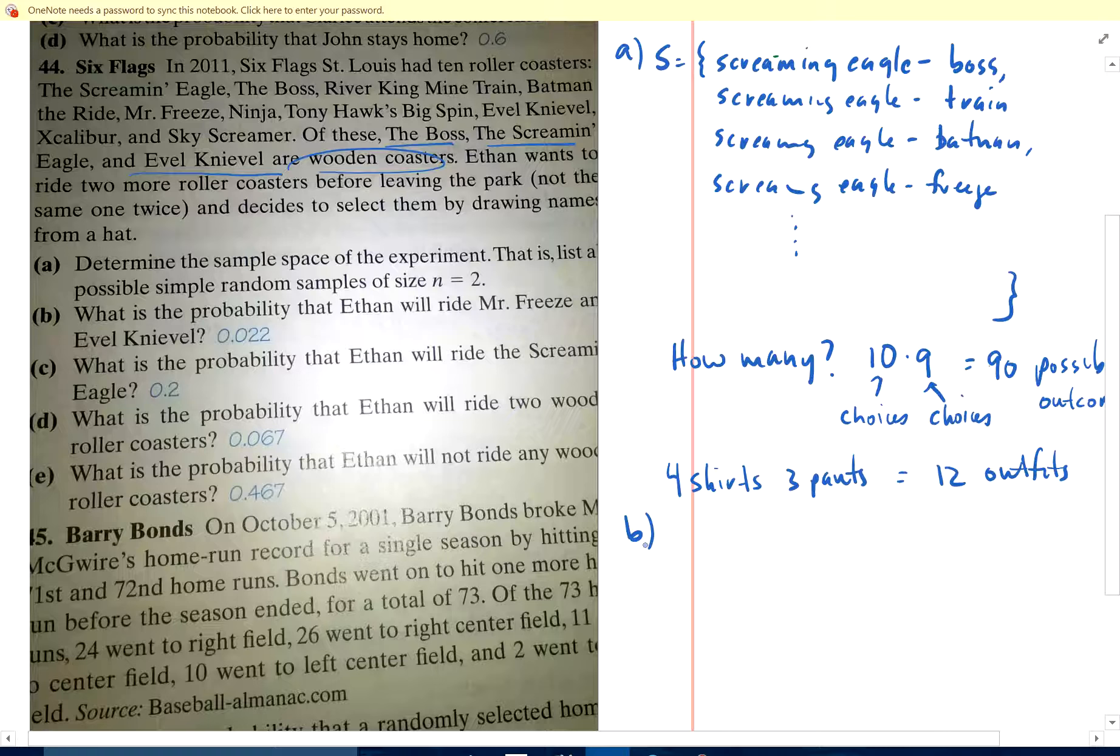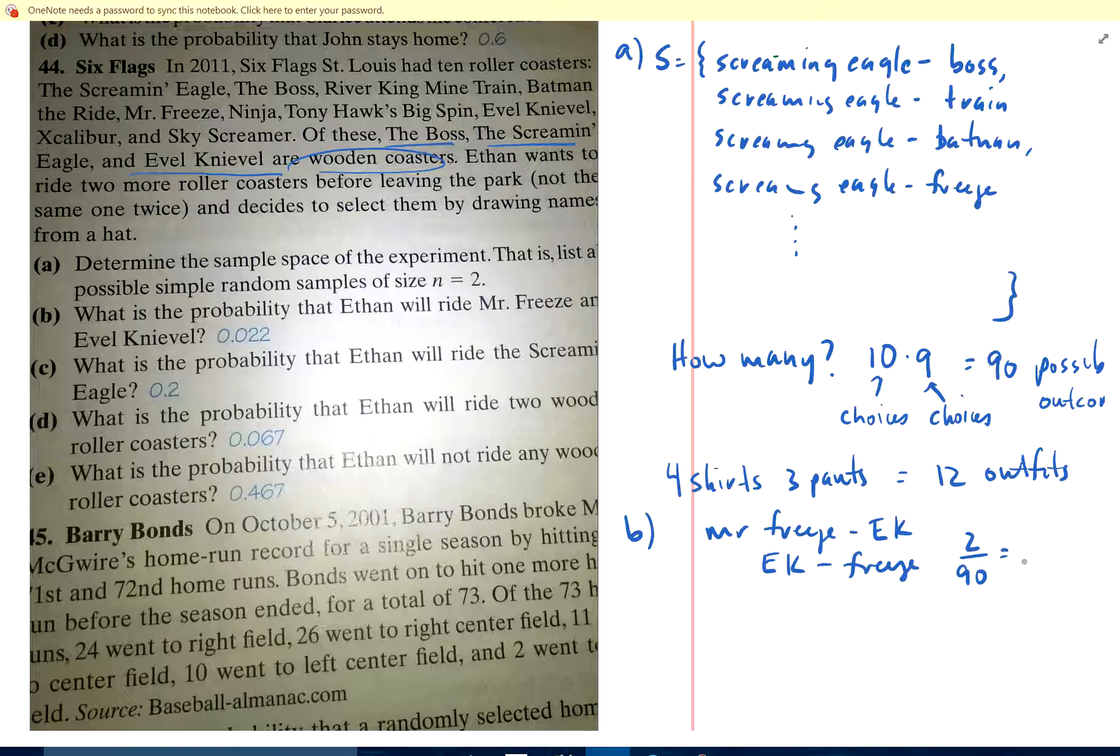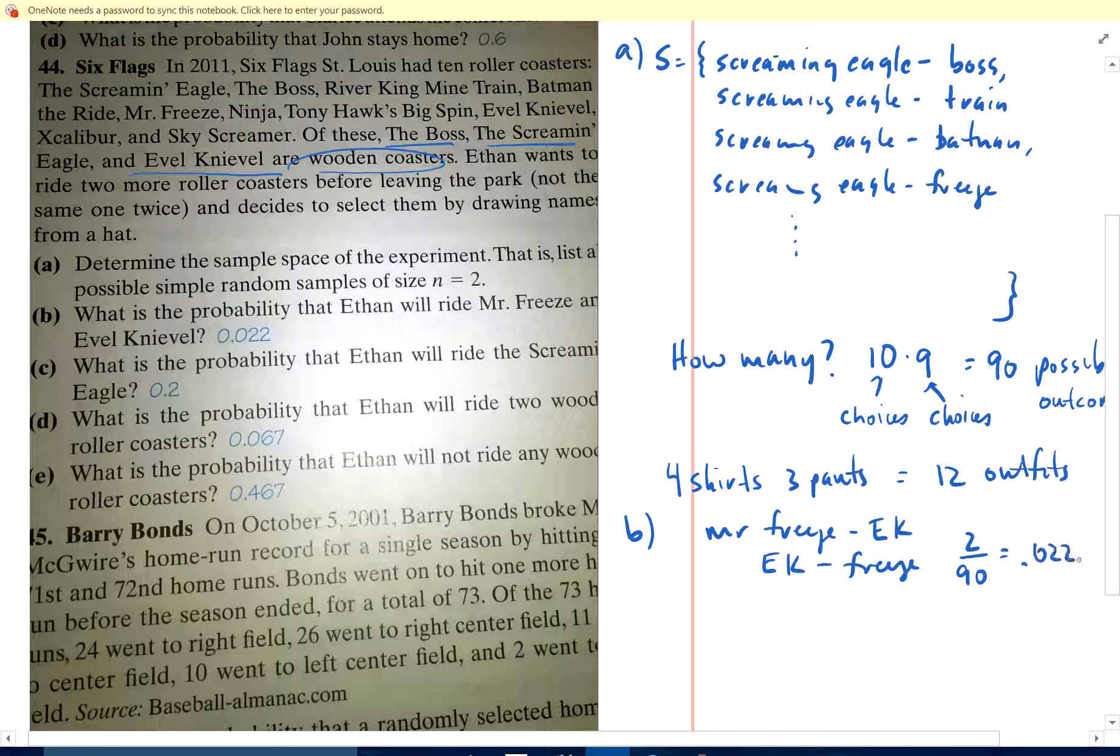All right, so let's get down to this. Part B: What's the probability that Ethan will ride Mr. Freeze and Evil Knievel? Well, of all of this list, how many of them are Mr. Freeze and Evil Knievel? I could write it in that order, or I could have chosen them in this order. So that's two of them out of the 90. Two divided by 90 is 0.0222, which it better be the same as that. So probability of Freeze and Evil Knievel is 0.0222. Because remember, you can get Mr. Freeze and Evil Knievel two different ways.